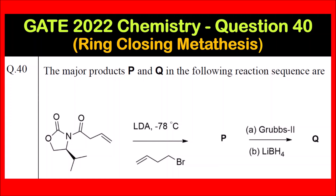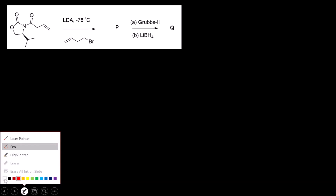What we have to do is identify the products P and Q. So let us draw the reactant that is given first: C double bond O, nitrogen. This entire bulky group is above the plane of the paper, that is on the wedge bond.